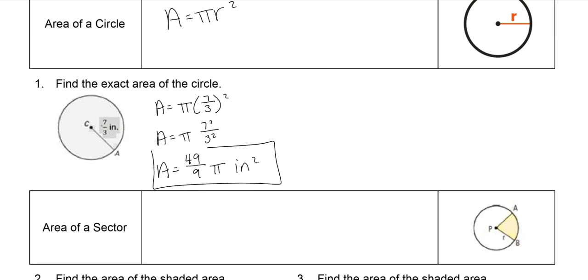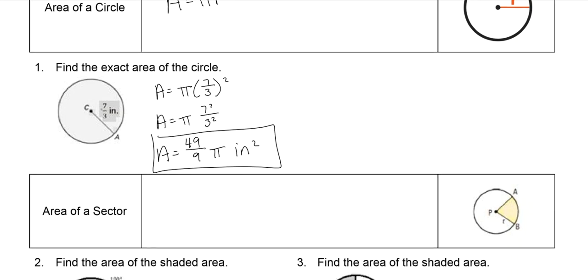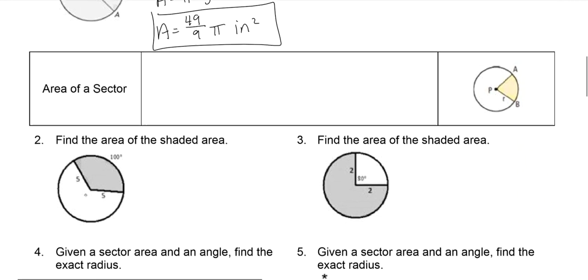You could of course do the rounded answer by doing 49 divided by 9 and then times that by the π button. Do not do 3.14, use the π button.